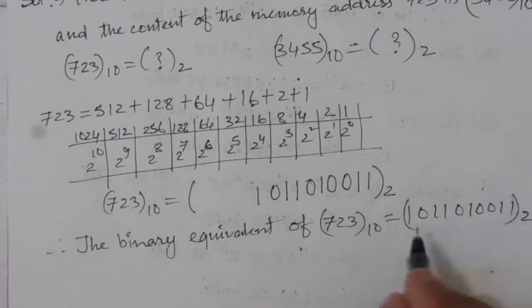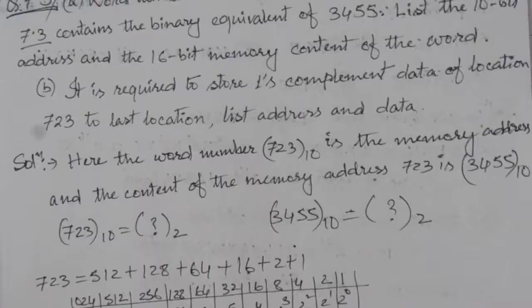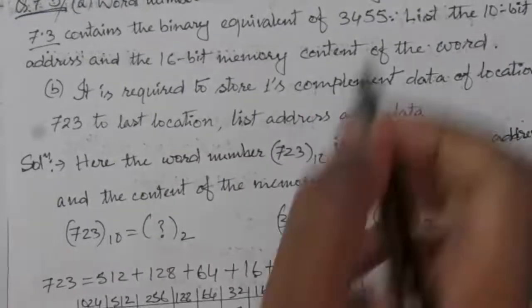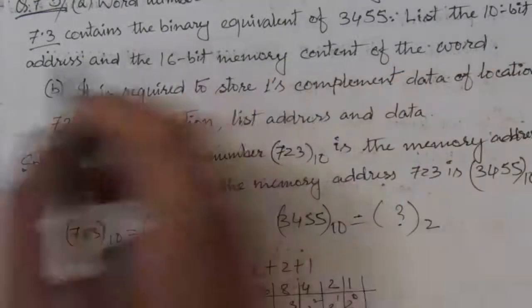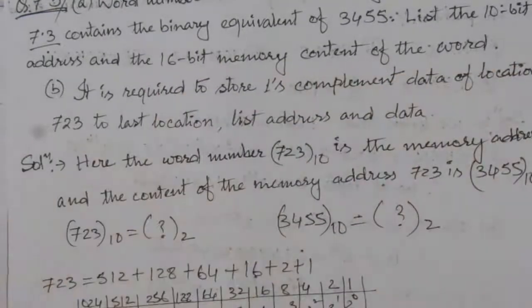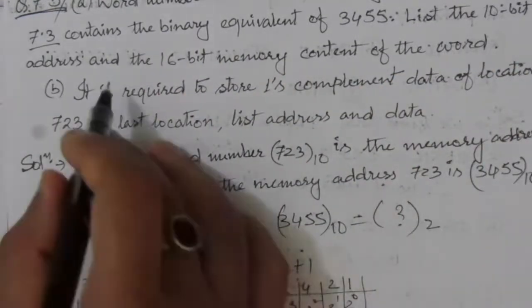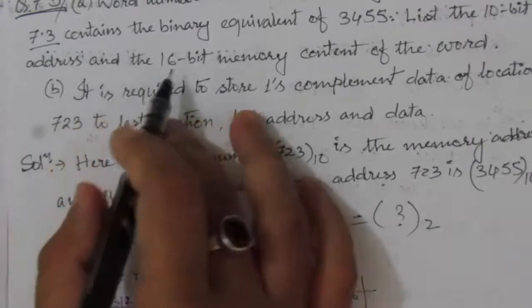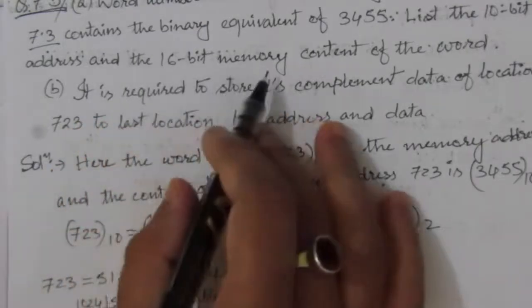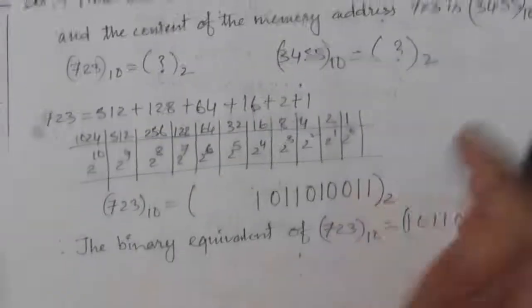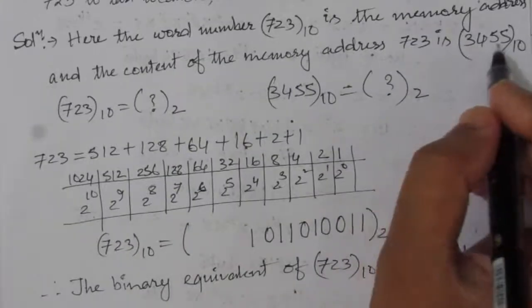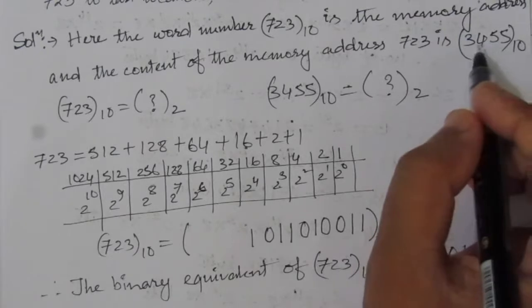So this is the 10-bit memory address. In the first part we had to list the 10-bit address, and we have obtained it. Now we need to find the 16-bit memory content, meaning we must convert the decimal data 3455 into a 16-bit binary number.